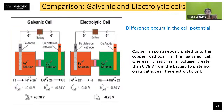Comparing a galvanic cell (Daniel cell) with an electrolytic cell: the difference is in the cell potential. In a spontaneous reaction, ΔG is negative and E⁰ is positive — for example, in the iron-copper reaction. In the electrolytic cell the reaction goes the other way: E⁰_cell is negative. Copper spontaneously plates onto the copper cathode in a galvanic cell, whereas it requires a voltage greater than 0.78 V from a battery to plate iron on the cathode in an electrolytic cell.